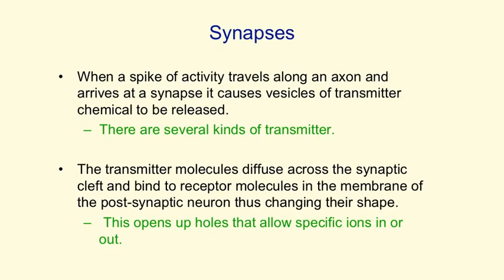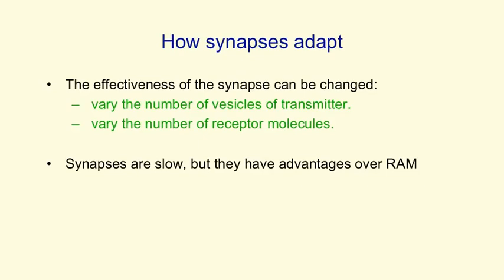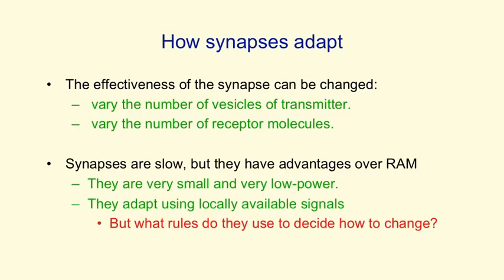Synapses adapt, and that's what most of learning is — changing the effectiveness of a synapse. Synapses can adapt by varying the number of vesicles that get released when a spike arrives, or by varying the number of receptor molecules that are sensitive to the released transmitter molecules. Synapses are very slow compared with computer memory, but they have a lot of advantages: they're very small and very low power, and they can adapt using locally available signals to change their strengths. The issue, of course, is how do they decide how to change their strengths — what are the rules for how they should adapt?